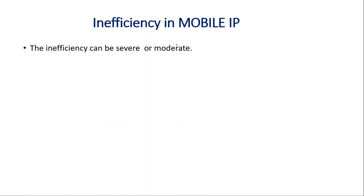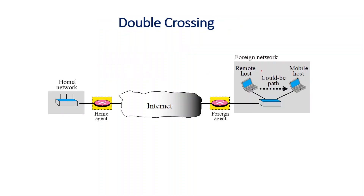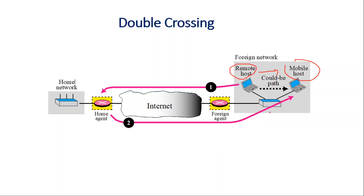Now we have inefficiency in Mobile IP. The inefficiency can be severe or moderate. The first inefficiency is double crossing, which is the severe case. This occurs when the remote host and the mobile host are in the same network. When the remote host sends a packet to the mobile host, it first goes to the home network, is intercepted by the home agent, and is then resent back to the same network. The packet travels unnecessarily and traverses the internet twice, making this very inefficient.